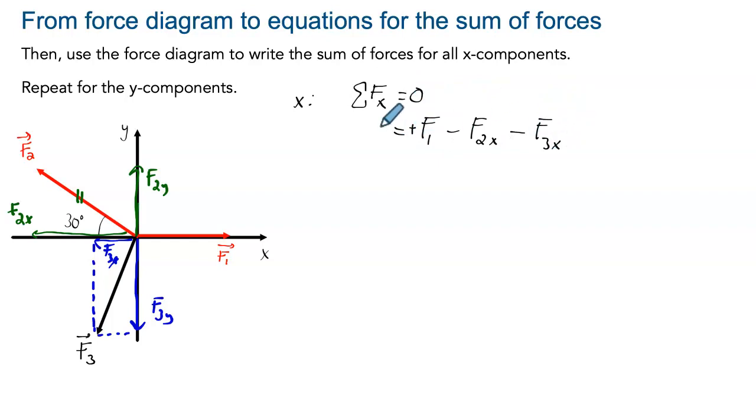And that's the equation that we will use. From that, you can see easily we can isolate F3x, which means just bringing it on the other side. So we'll have F3x is equal to F1 minus F2x. That's it.